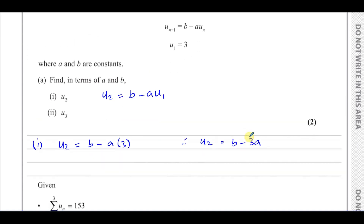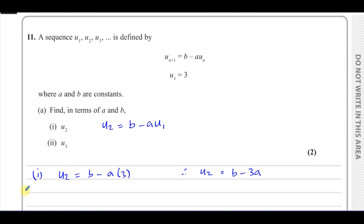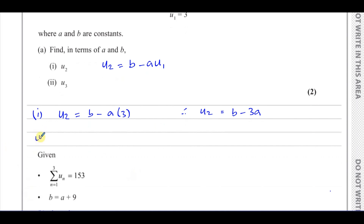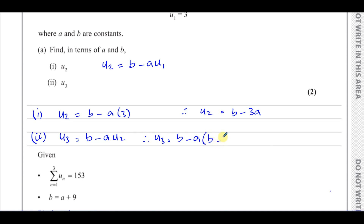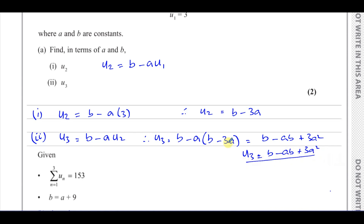Now we do the same for U3. U3 is equal to B minus A times U2. Since U2 equals B minus 3A, we substitute that in: U3 equals B minus A times (B minus 3A), which expands to B minus AB plus 3A squared. So U3 is equal to B minus AB plus 3A squared.